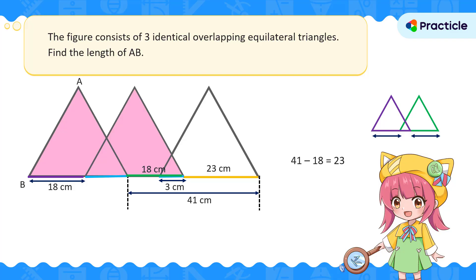Now we're only one step away from finding AB. Since we know that this length is 23 cm and this is 3 cm, we can add them up to find the length of one side of the triangle. This will be the same as finding the length of AB.